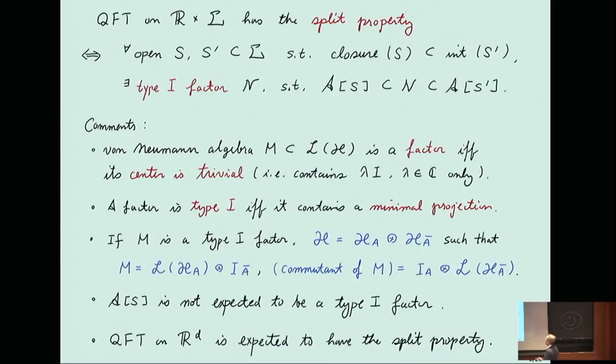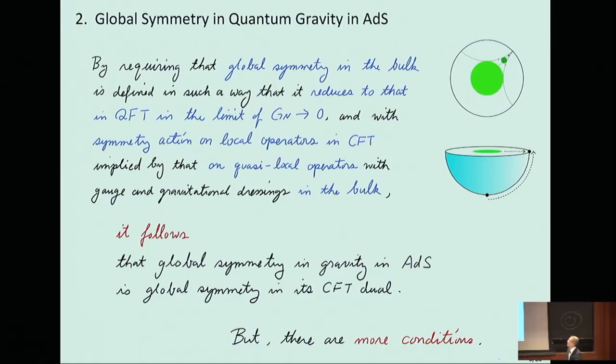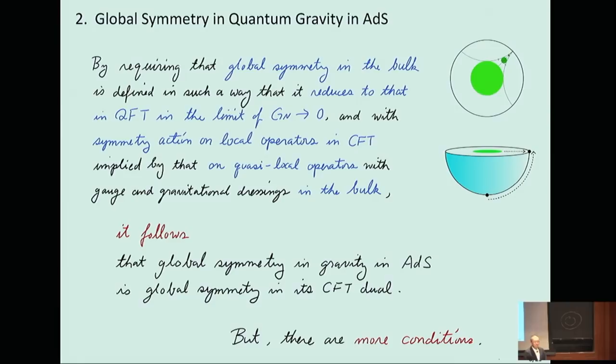Now let me move on to global symmetry in quantum gravity in ADS. As I said, this is a concept I'm going to show does not exist. Our task is to come up with a minimal set of conditions we think are absolutely needed for global symmetry in this context, and then show that even with this minimum assumption, it leads to inconsistency. We require that the definition of global symmetry in the bulk continuously reduces to global symmetry in ordinary quantum field theory in the limit when Newton's constant is turned off.